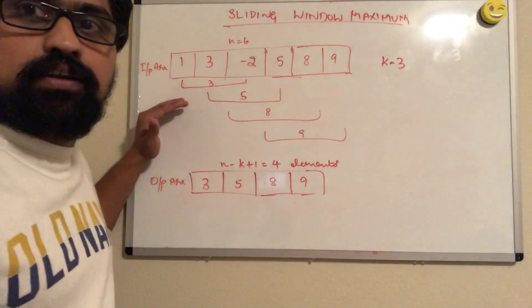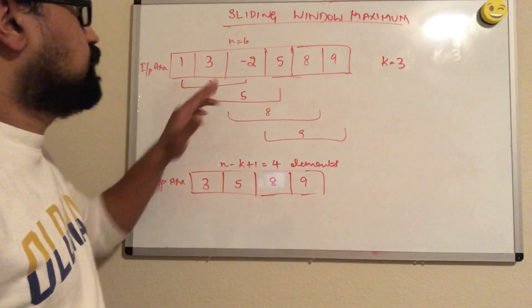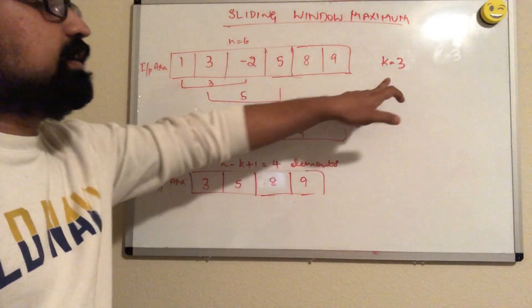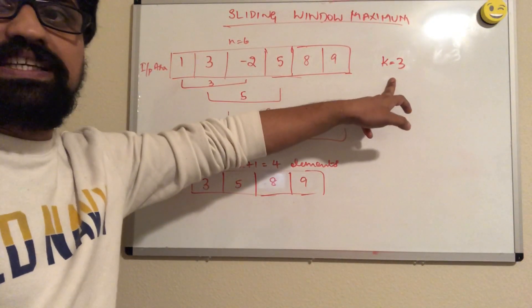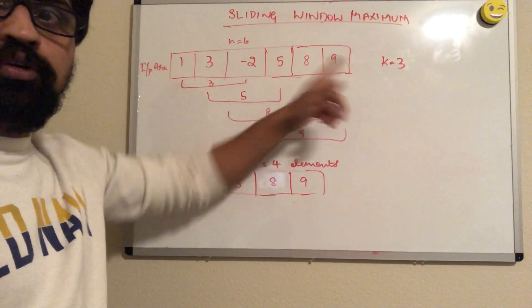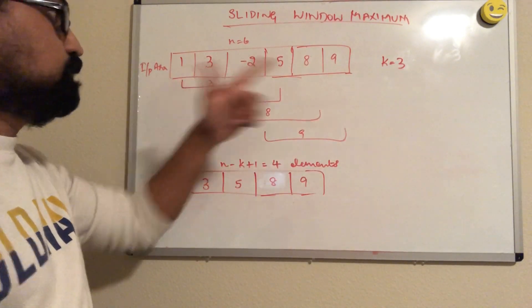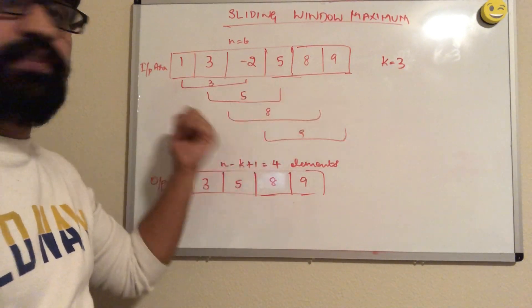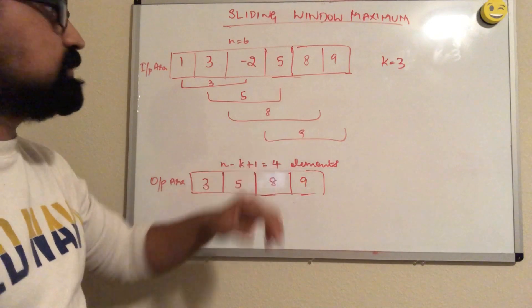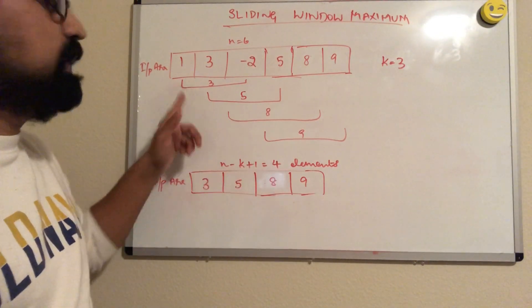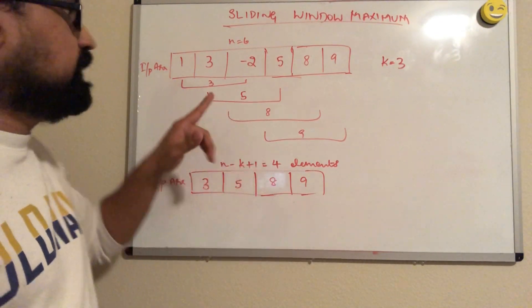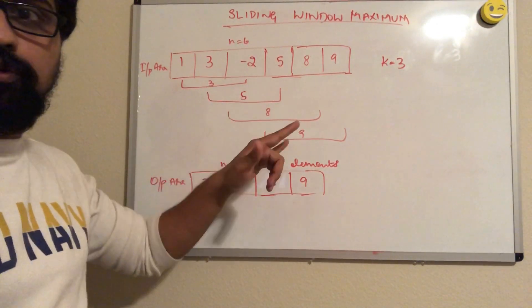We're given an input array of integers of size n and a sliding window of size k. The sliding window moves from left to right in the array from the starting index till the end index. We have to find the maximum number in every window.